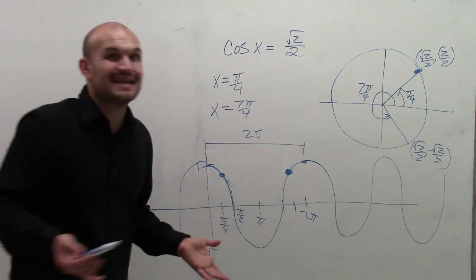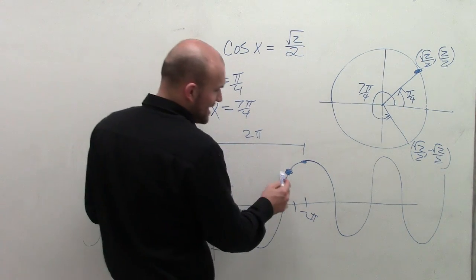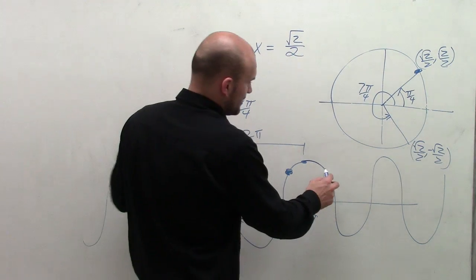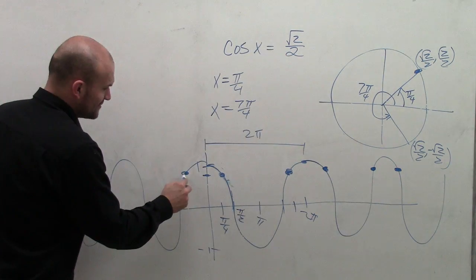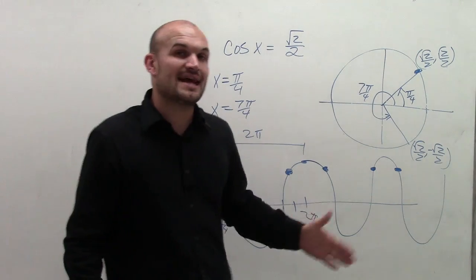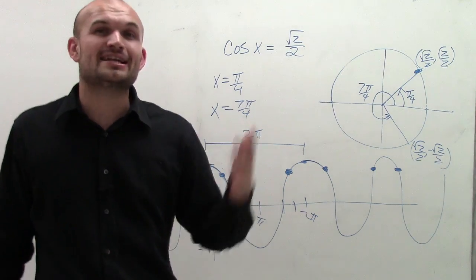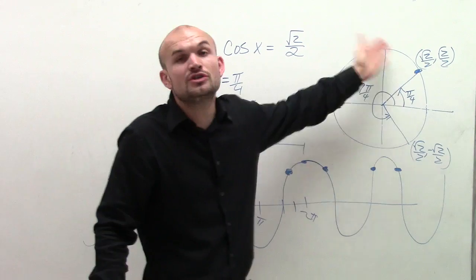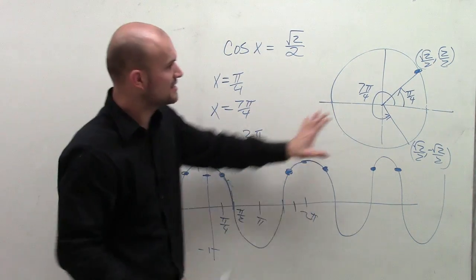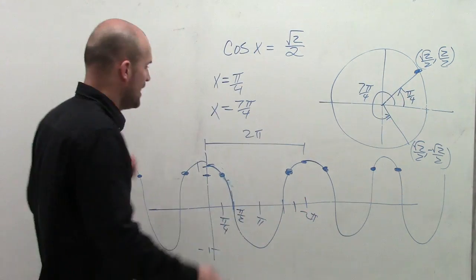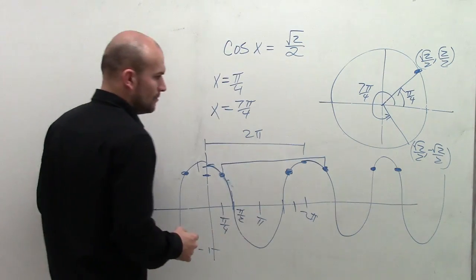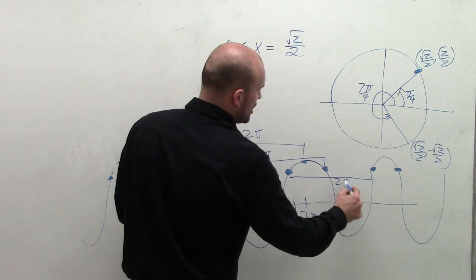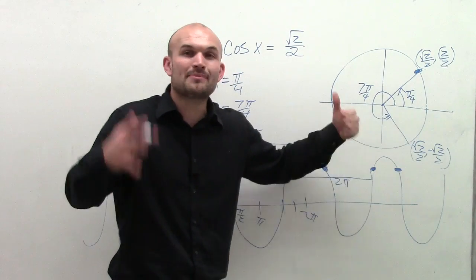The distance between these two solutions is not 2 pi, so we have a little issue here. But looking at the graph at the value of square root of 2 over 2, there are solutions repeating — positive solutions and negative solutions — giving us infinitely many solutions. To get from one solution to the next equivalent solution, that distance is 2 pi. So repeating that addition of 2 pi keeps giving us new solutions.